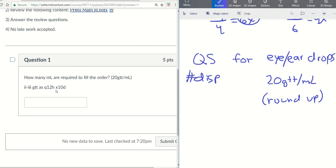For example, we got this SIG here. 2 to 3 drops into the left ear every 12 hours for 10 days. So we've got to figure out the number of drops per dose, multiply by the number of doses, and then multiply by the days.